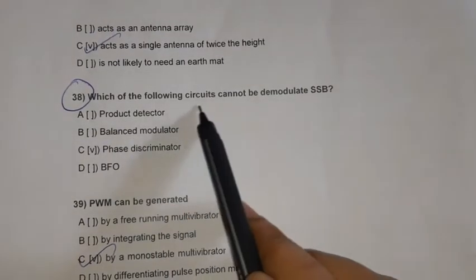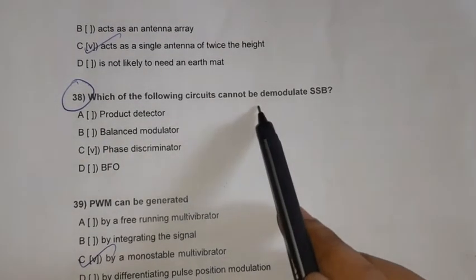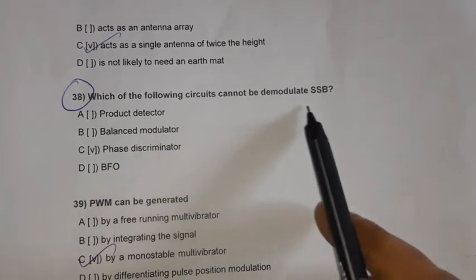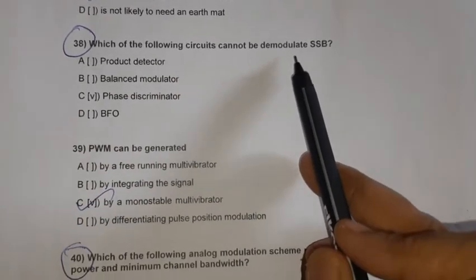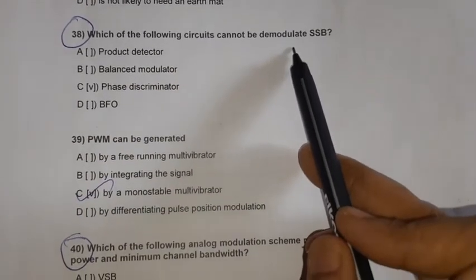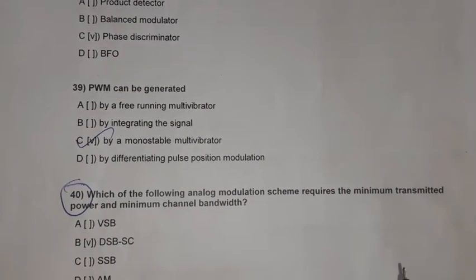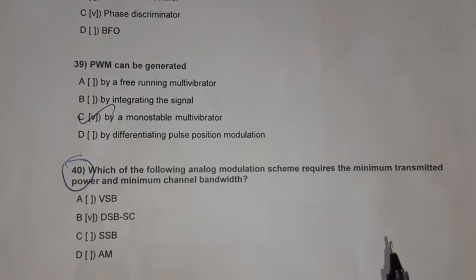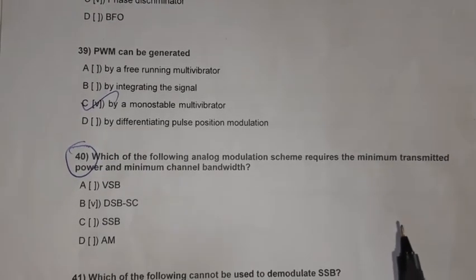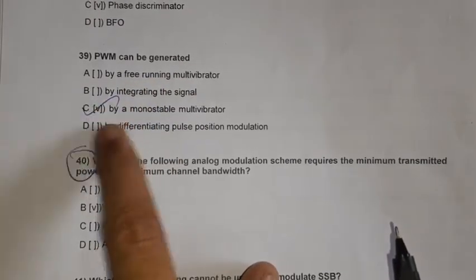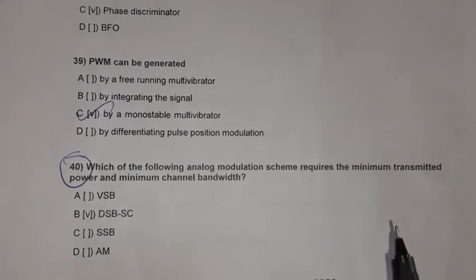Question 37: An ungrounded antenna near the ground is horizontally polarized, acts as an antenna array, or acts as a single antenna of twice the height. Question 38: Which of the following circuits cannot demodulate SSB? The answer is a phase discriminator. Question 39: PWM — pulse width modulation — can be generated by a monostable multivibrator.